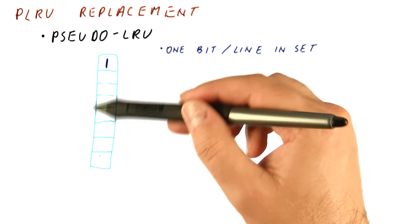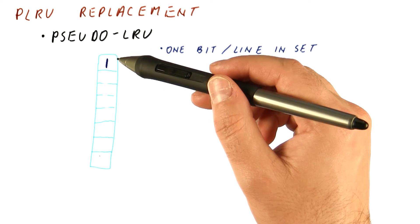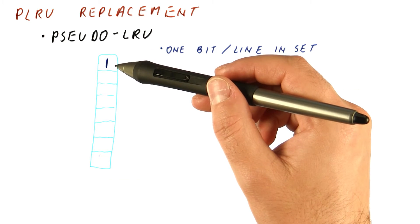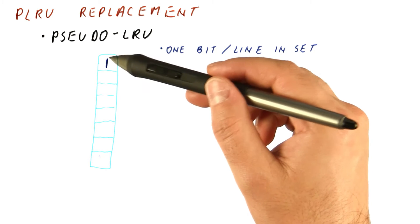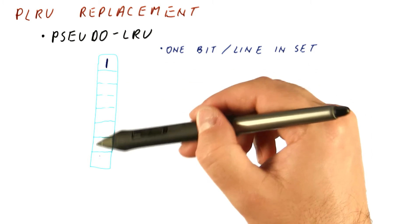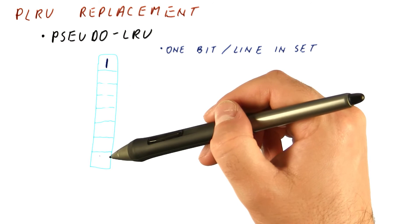Now we have state that is similar to what not most recently used would tell us. We only know what was the most recently used block. For the rest of them, we need to pick at random if something needs to be replaced.